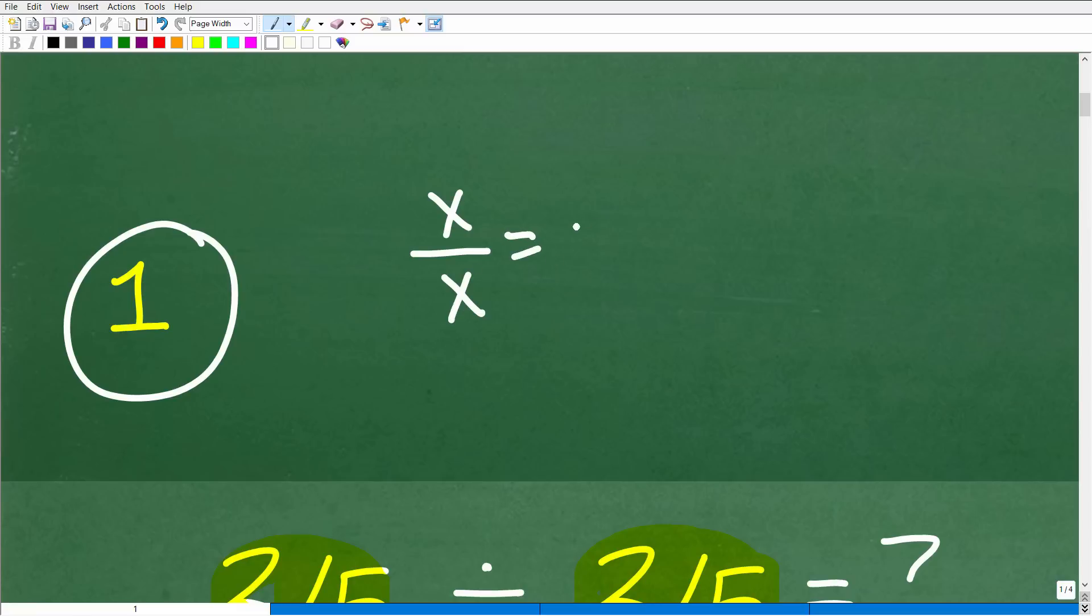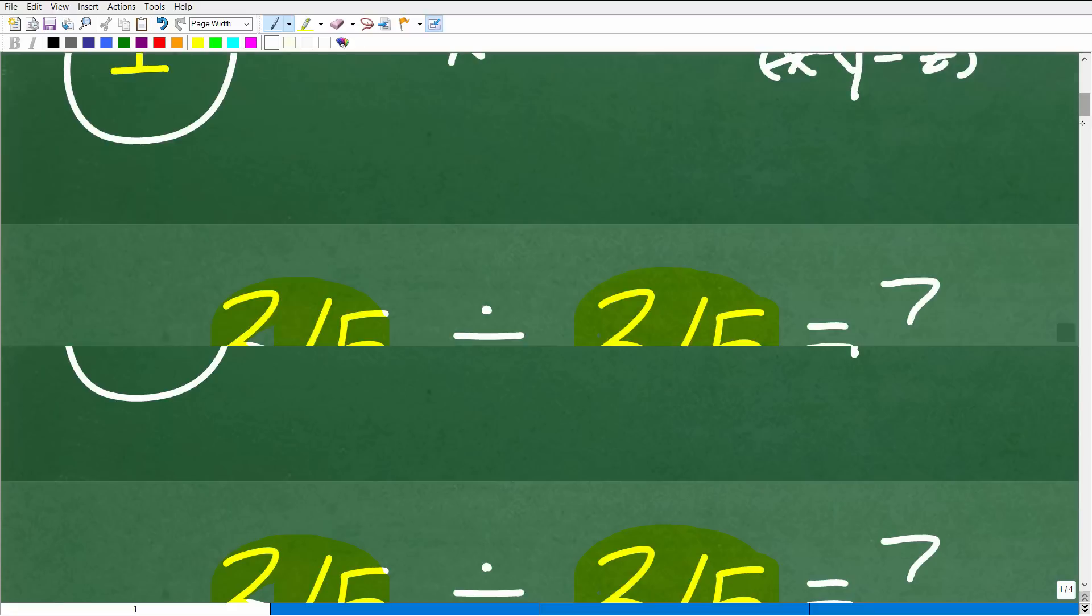Let's just take a couple quick examples of this just to kind of reinforce this principle. If I take x and I divide it by x, what is the answer? It is 1. If I take some crazy expression, x squared, y minus z over x squared, y minus z, what is the answer? Well, it is 1. Anything divided by itself is 1.